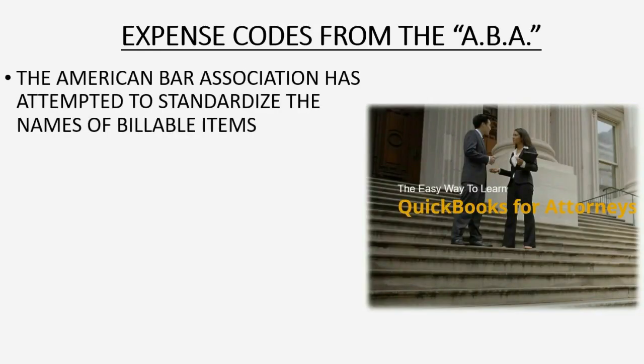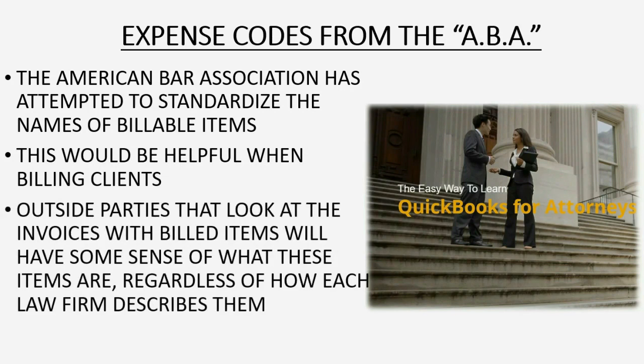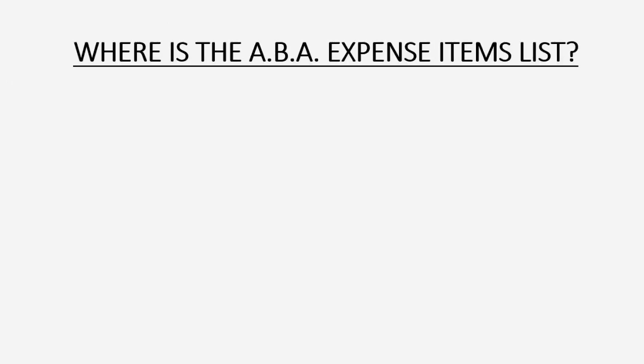This would be helpful when billing clients. Outside parties that look at the invoices with billed items will have some sense of what these items are, regardless of how each law firm would describe them. So where is the ABA expense item list?